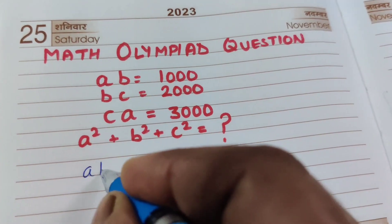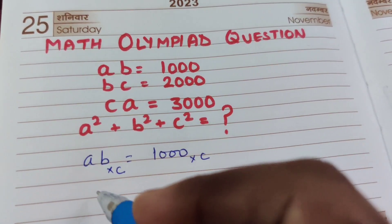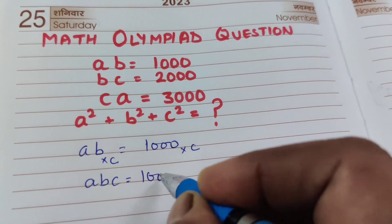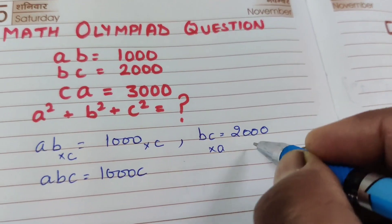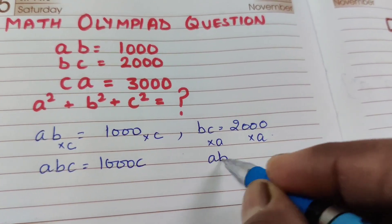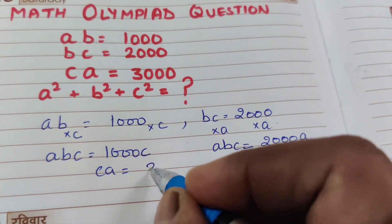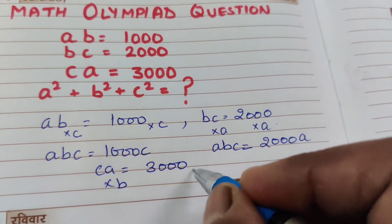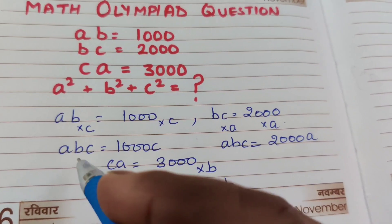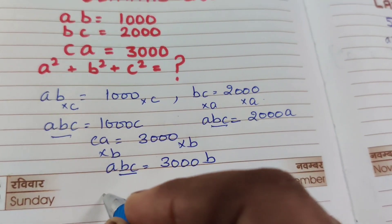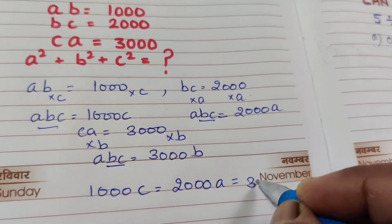Suppose AB equal to 1000 — multiply both sides by C — we get ABC equal to 1000C. Next, BC equal to 2000 — multiply both sides by A — we get ABC equal to 2000A. And the third one, CA equal to 3000 — multiply both sides by B — we get ABC equal to 3000B. Since the value of ABC is the same, we can equate: 1000C equal to 2000A equal to 3000B.